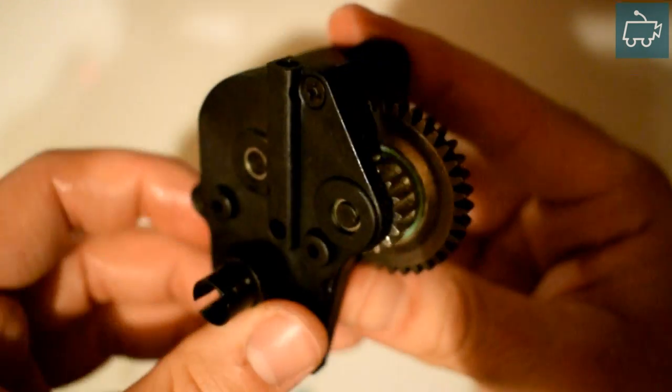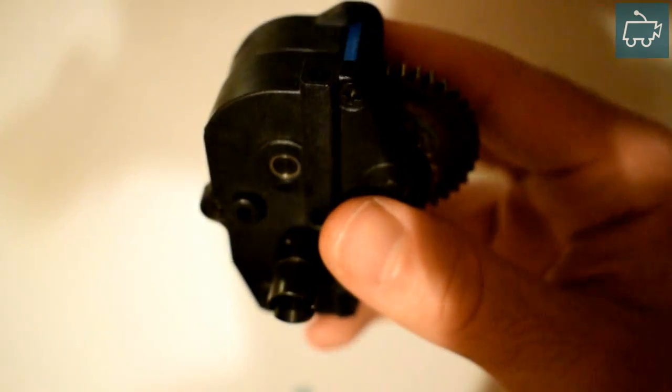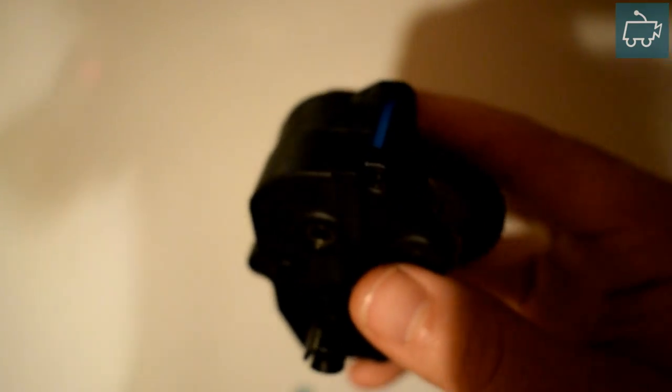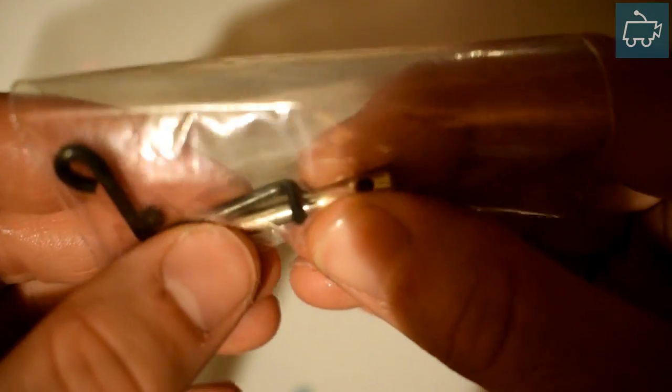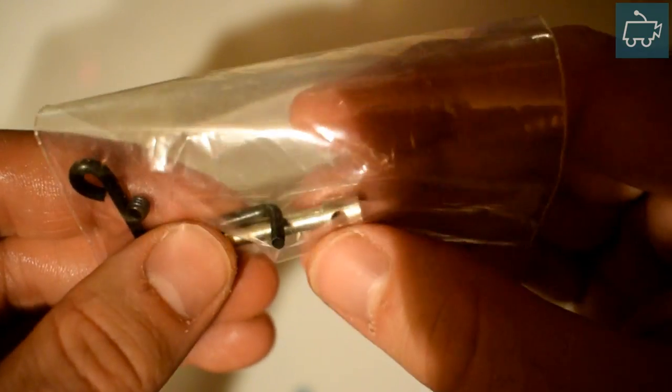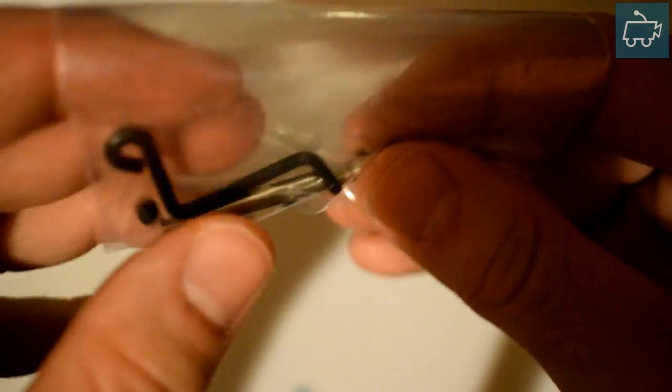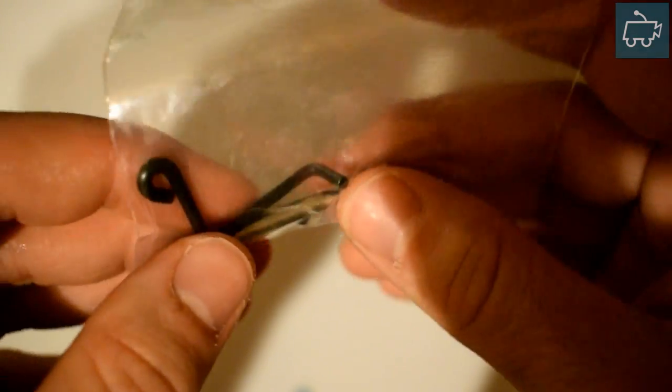Next you need to install this part here. This is part number 08016. This part is basically a little push rod for your brake pads. Now it's important, you need to install these first before you install the brake pads, otherwise you need to take your pads off again. So let's open up this part here.